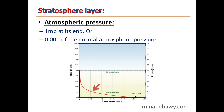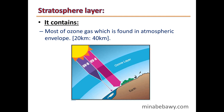Atmospheric pressure in the Stratosphere decreases with increasing height until it reaches only 1 mb at the Stratopause, which is equivalent to 0.001 of the normal atmospheric pressure. The Stratosphere contains most of the ozone gas in the atmospheric envelope, found between heights of 20 km and 40 km.